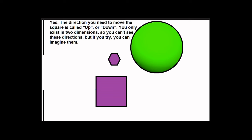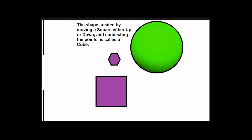LDM? So I was right. The next step is to move a square? Yes. The direction you need to move the square is called up or down. You only exist in two dimensions, so you can't see these directions, but if you try, you can imagine them. The shape created by moving a square either up or down and connecting the points is called a cube.